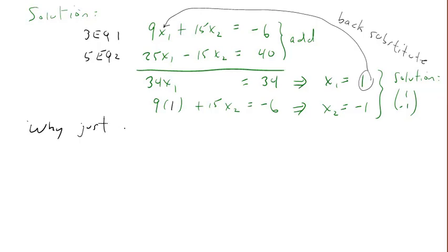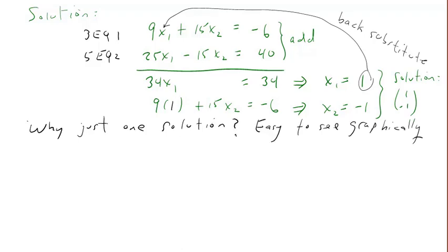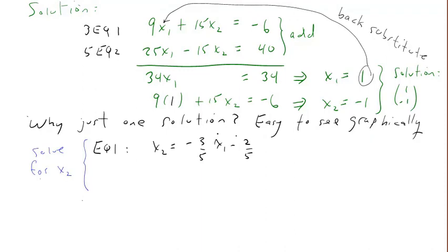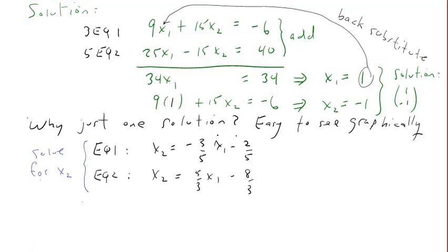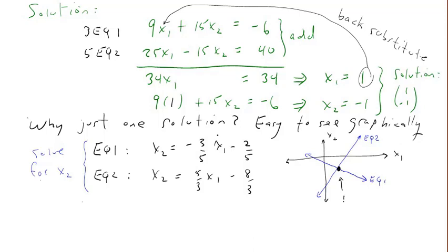Why do we get just one solution in this case? If we graph both equations — solving both for x2 and graphing x2 versus x1 on a rectangular coordinate system — we end up with two lines that intersect in a single point. That point of intersection is the solution of the system. That's why there's just one solution.